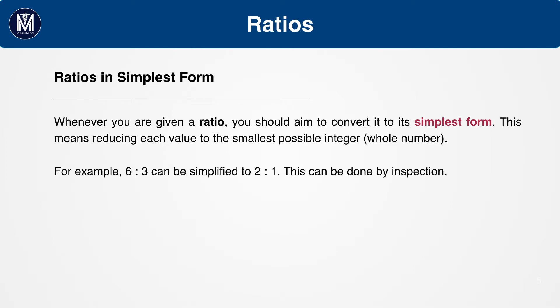When you form a ratio, you want to convert it to the simplest possible form. For example, if you make a ratio of 6 to 3, then you can convert this to 2 to 1 by inspection.